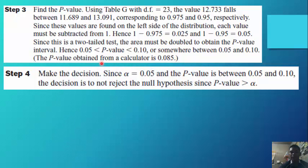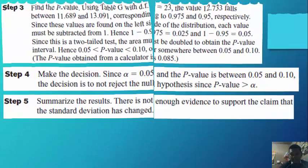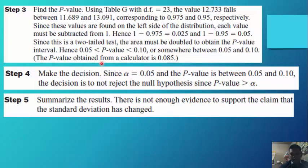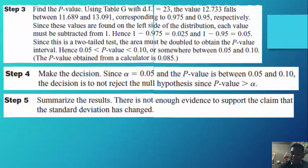Step 4: Make the decision. Since alpha is 0.05 and the p-value is between 0.05 and 0.10, the decision is not to reject the null hypothesis. Summary: there is not enough evidence to support the claim that the standard deviation has changed.